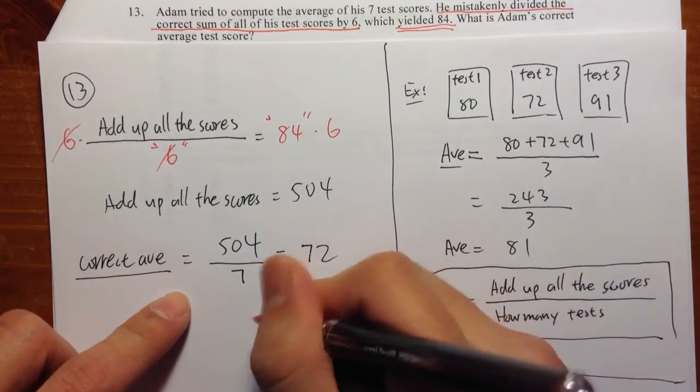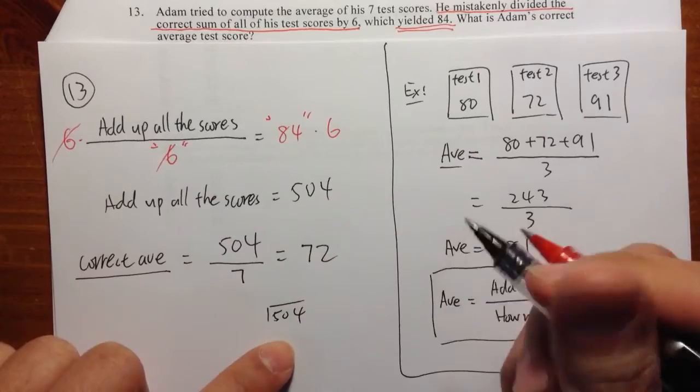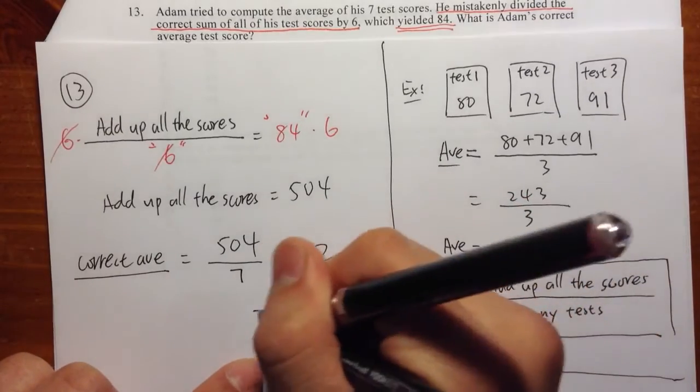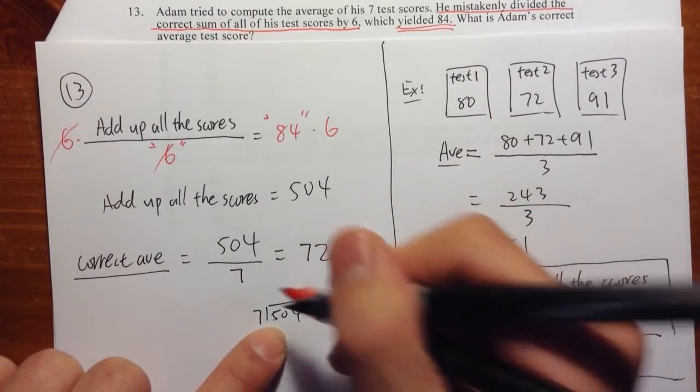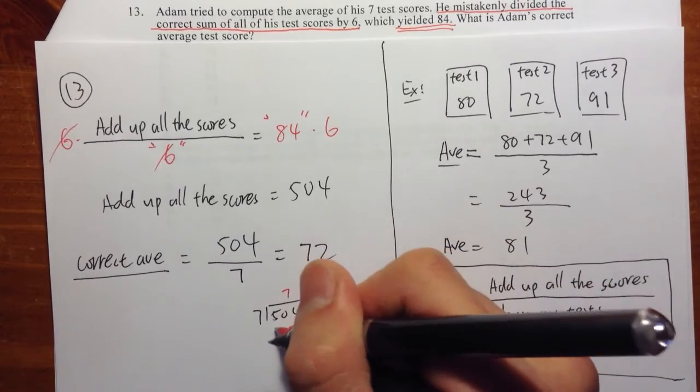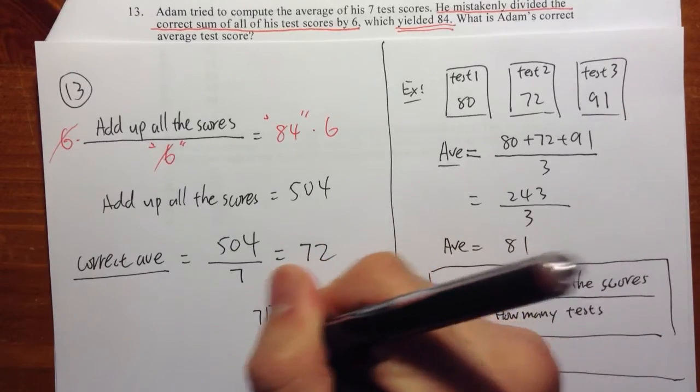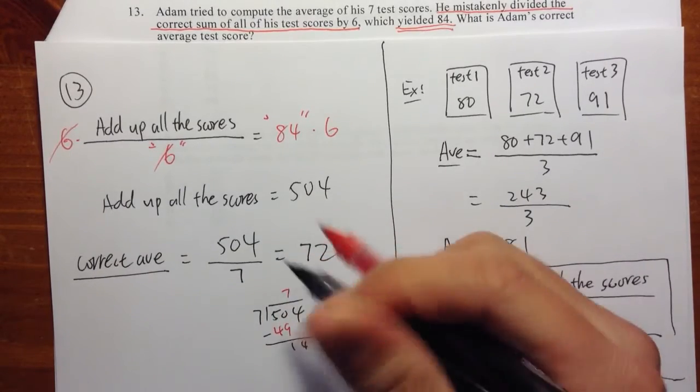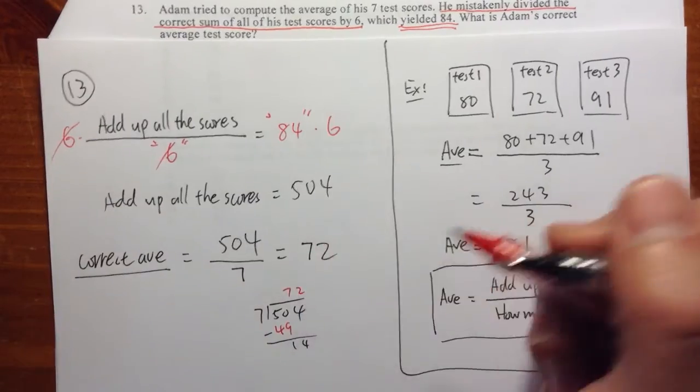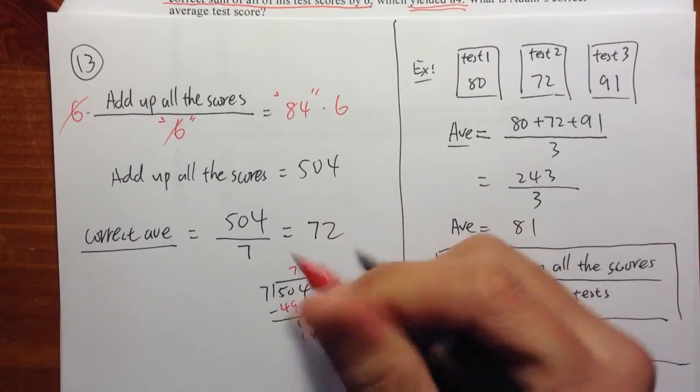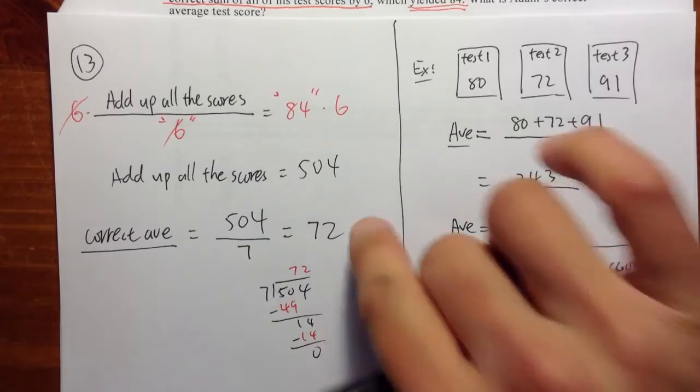You can use long division, so let me show that real quick. 504 divided by 7. 7 goes into 50, 7 times. 7 times 7 is 49. Subtract, you get 14. 7 goes into 14, twice. 2 times 7 is 14, which is 0. So that's how I got 72.